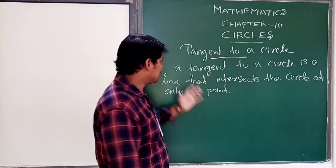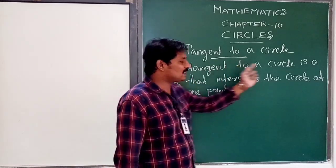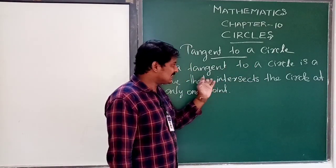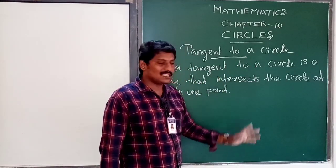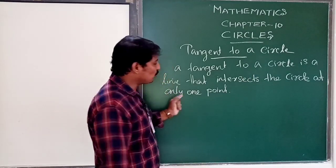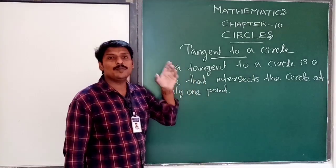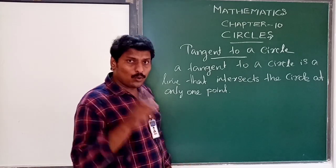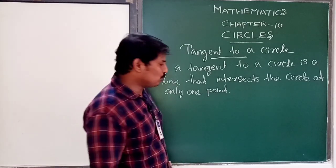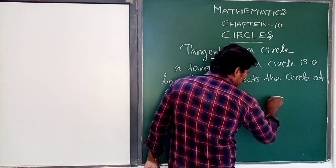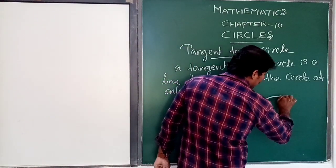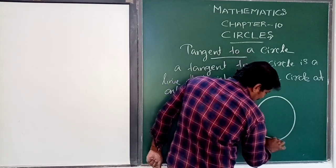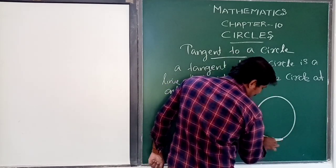Why is it a tangent? A tangent to a circle is a line that intersects the circle at only one point. One point will touch each other.